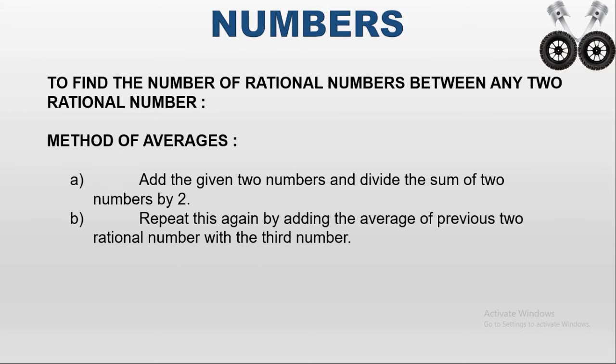The first method is the average method. Here we are going to add the two given rational numbers and divide by two. Then you will get the average of the given rational numbers. If you want to find a third rational number, you have to add the average and the first rational number, then divide by two.